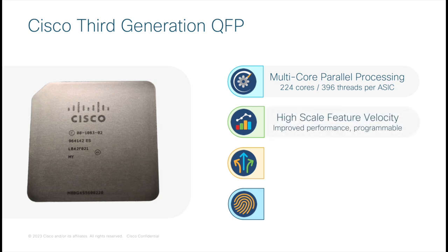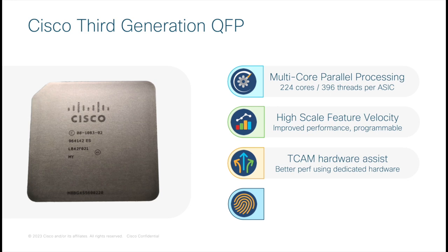This well-evolved architecture accelerates feature velocity and provides backwards compatibility for existing platforms and features. To assist the QFP ASIC in achieving maximum throughput, there are a number of hardware assists around it. Two mirrored 160 megabit TCAMs are included in every C8500 20X6C, used for high-speed complex pattern matching. These assist the QFP in processing access control lists for QoS, firewalling, NAT, and other features.